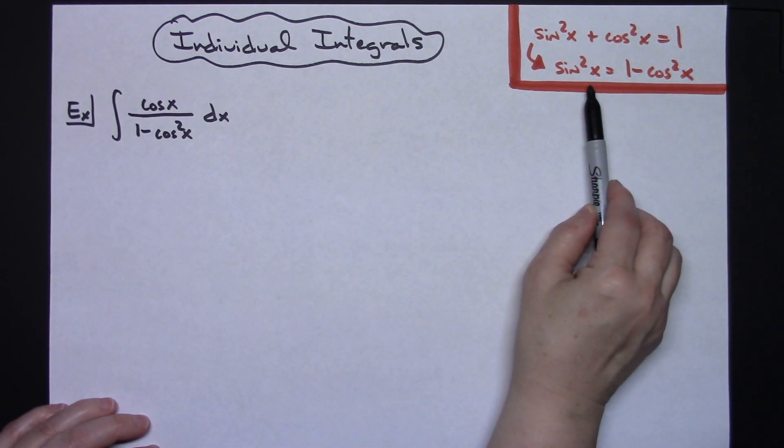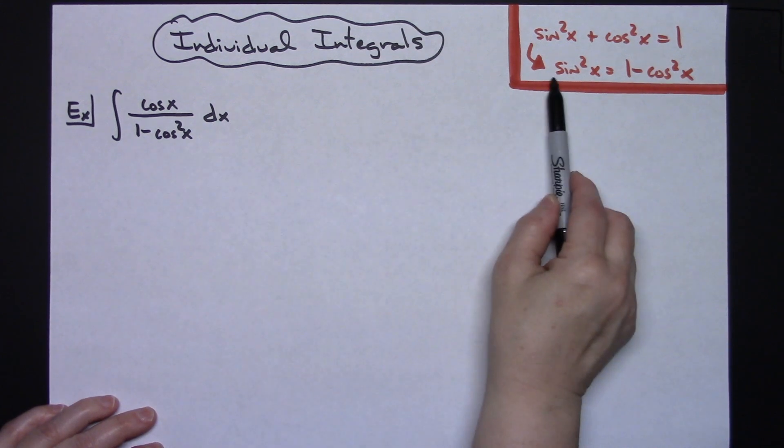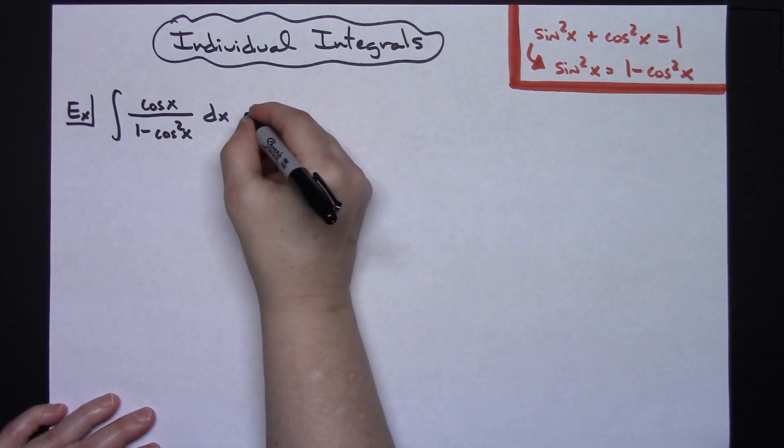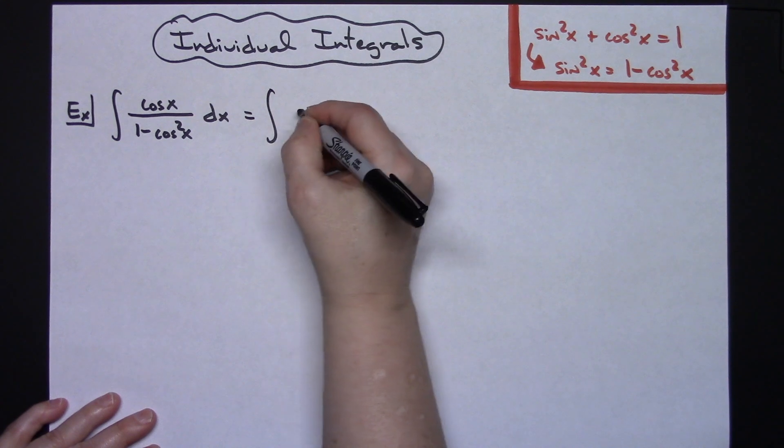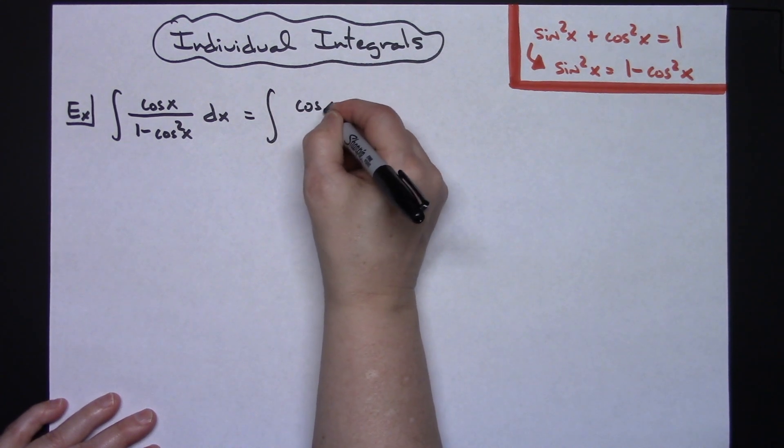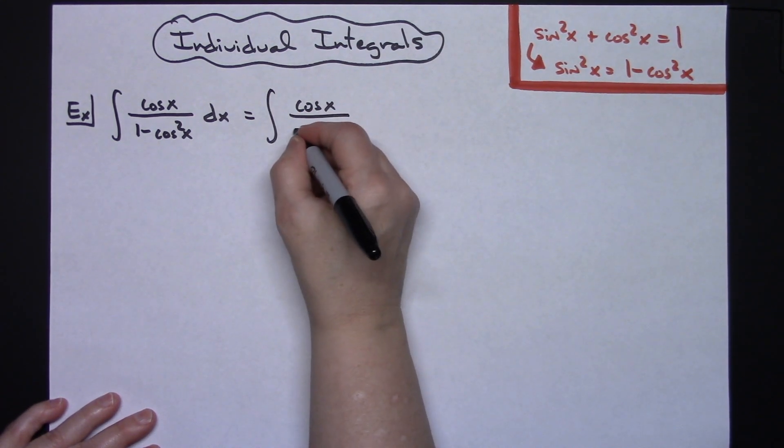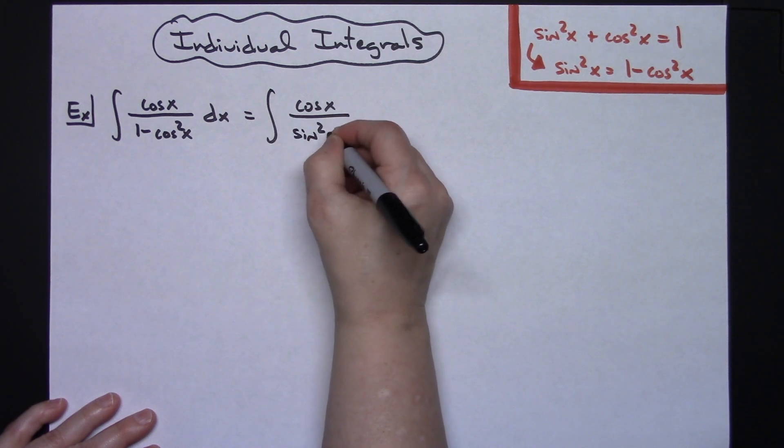So my first step is going to be to do that substitution. I'm going to replace that denominator with the sine squared x. So then I'm going to have the integral of cosine x over sine squared x dx.